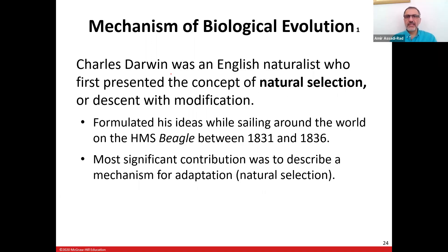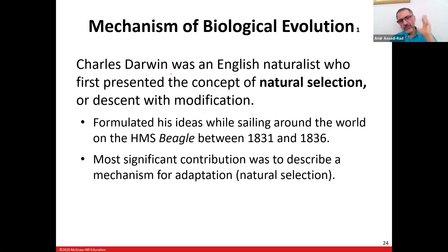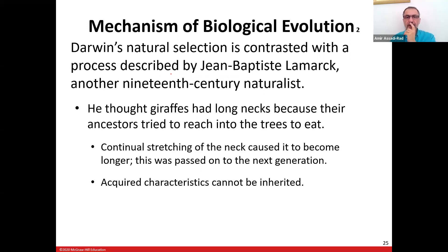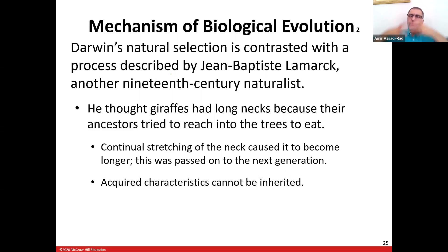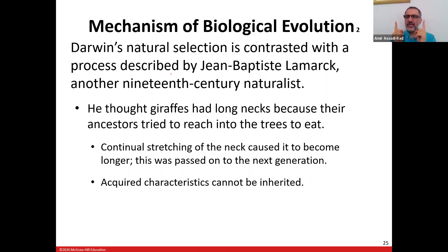A key mechanism of biological evolution is natural selection, proposed by Charles Darwin, who traveled around the Earth for five years on the Beagle. Before Darwin, Lamarck said organisms evolved individually. Darwin said no — organisms evolve as a population. That was the main difference between Lamarck and Darwin.